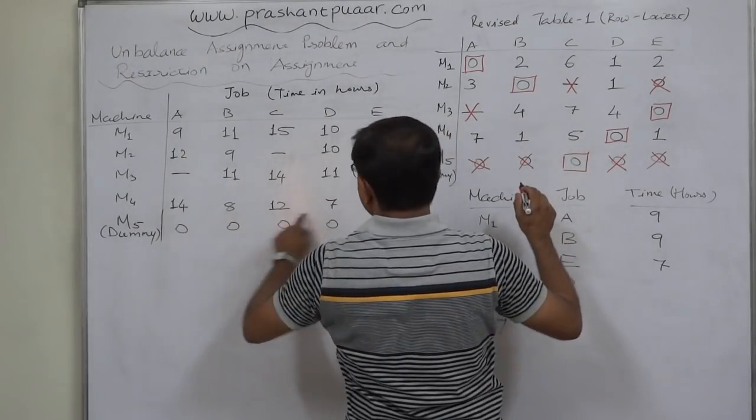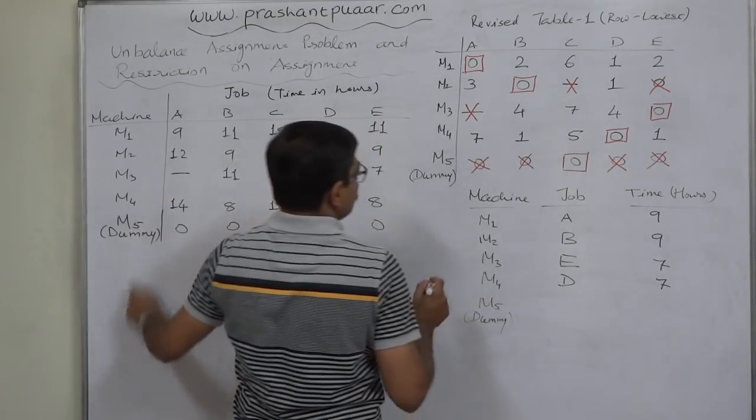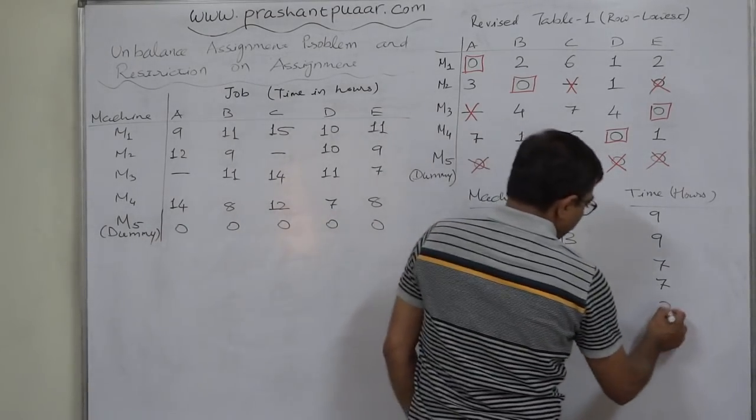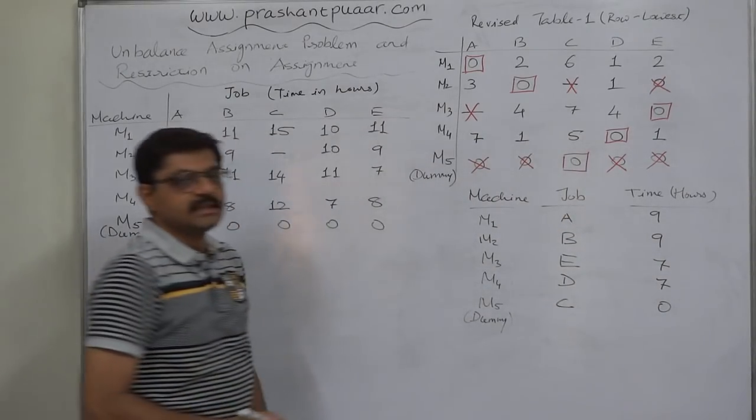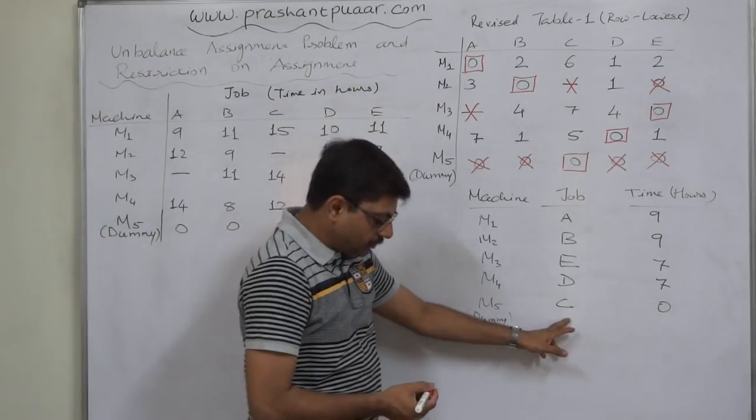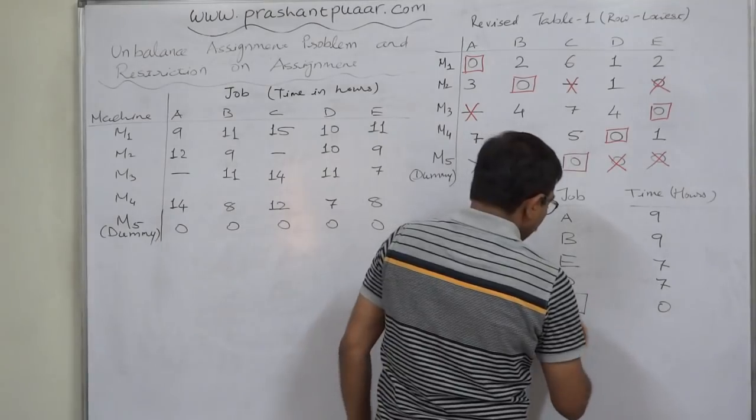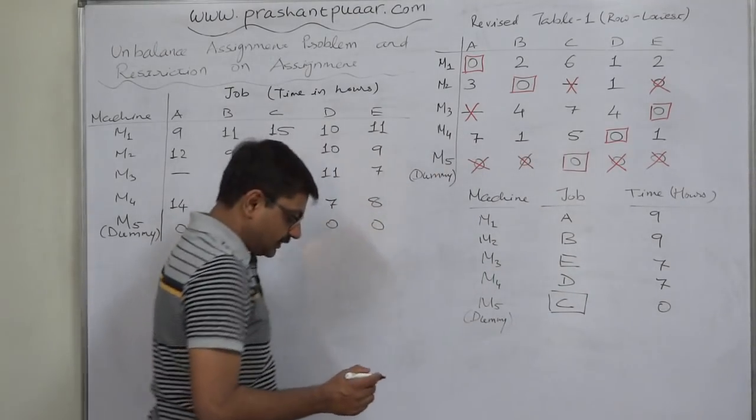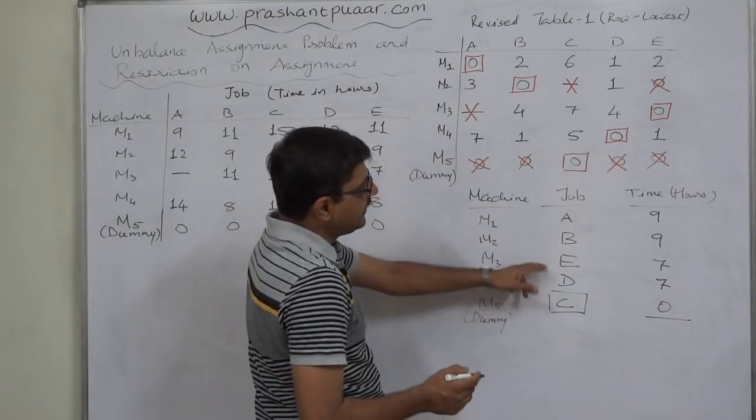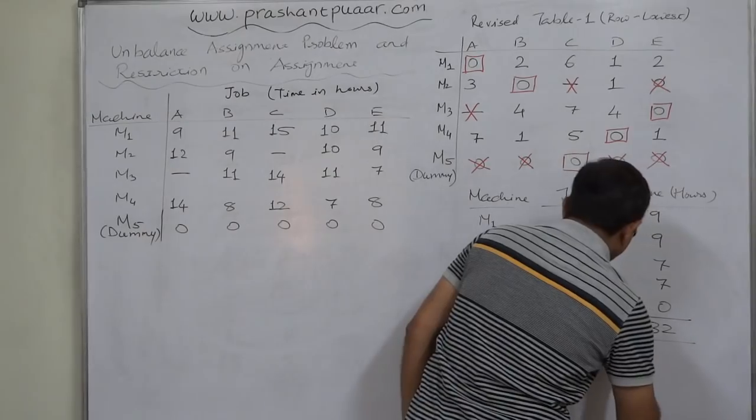Machine M4 is assigned job D. Total time machine 4 and D is 7. And machine 5 is assigned job C. Time is 0 because there is nothing like machine 5. Job C is assigned to the dummy machine. That means job C is not going to assign to any machine. We are going to assign only jobs A, B, D and E and the total time will be 32 hours.